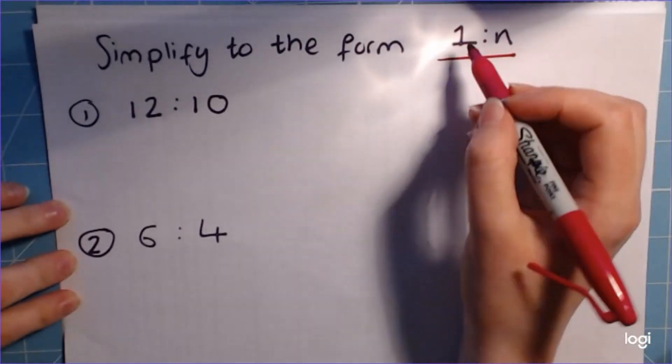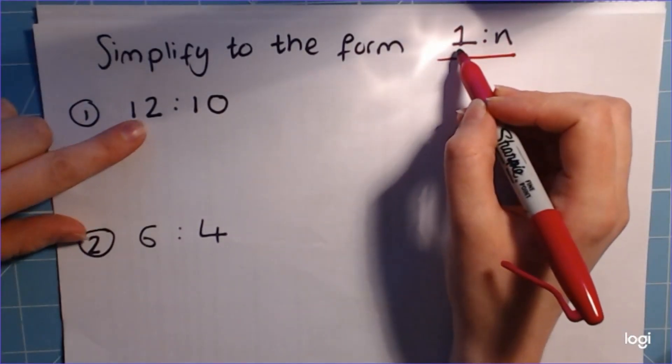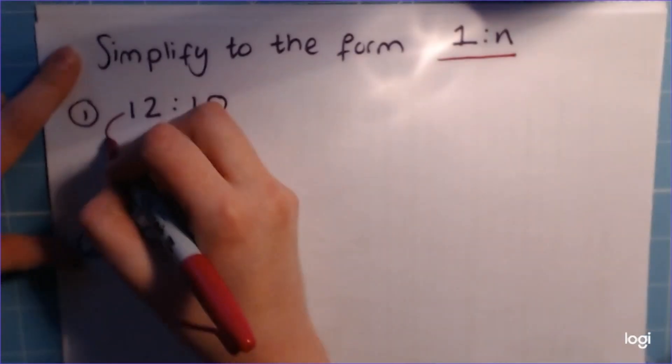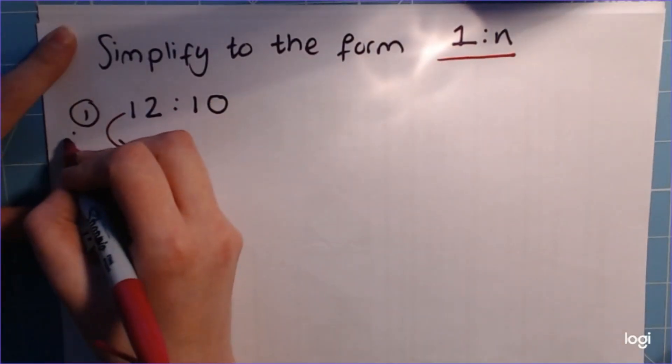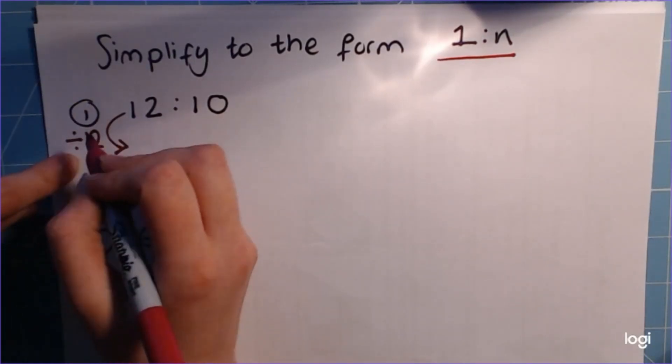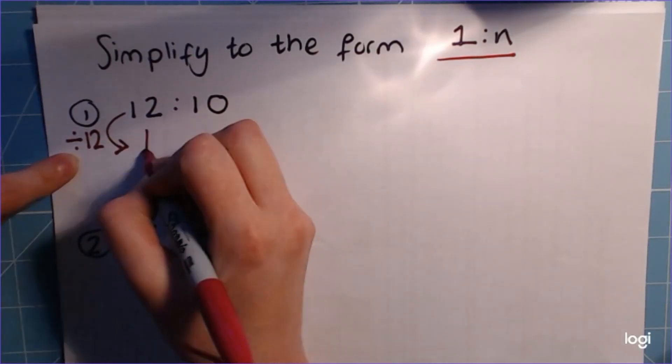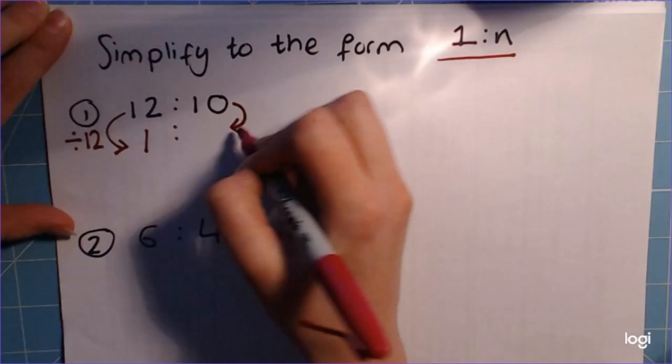So what we're looking for is the first number, the first part of our ratio to be a 1. So we're going to do whatever we need to to that number to get a 1. And usually it's just dividing by itself. Because 12 divided by 12 is 1, 12 goes into 12 one time, so we get the 1. But as we just saw, we have to do the exact same thing to the other side.